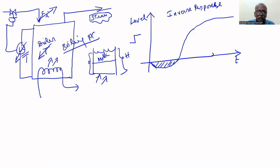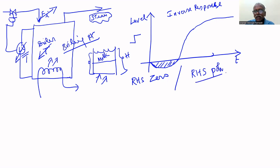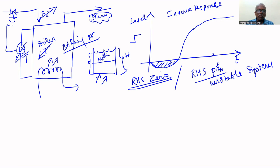This will happen because of a right-hand side zero. If a system has a right-hand side pole, then it will be unstable. But if it has a right-hand side zero, there is no problem for stability, but it will exhibit the inverse response.